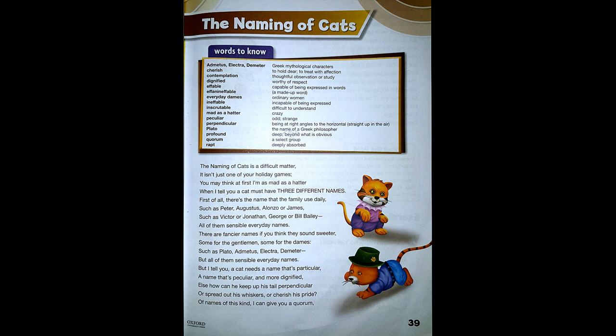Admetus, Electra, Demeter — Greek mythological characters. Cherish — to hold dear, to treat with affection.